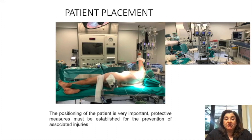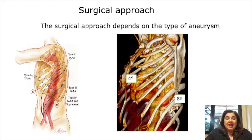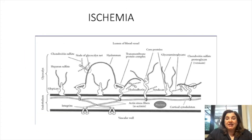The positioning of the patient is very important. Protective measures must be established for the prevention of associated injury. The angle of the shoulders with the hips and the surgical approach depends on the type of aneurysm, from the 4th to 8th intercostal spaces.